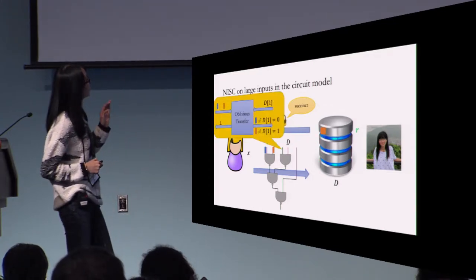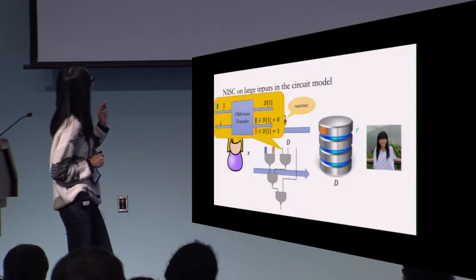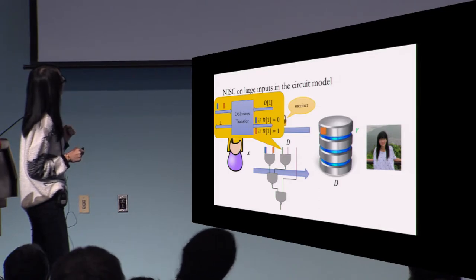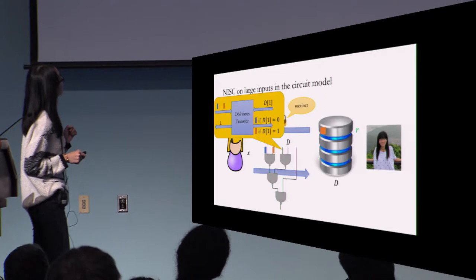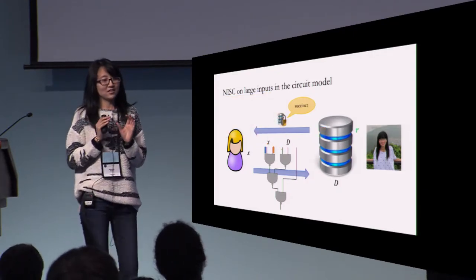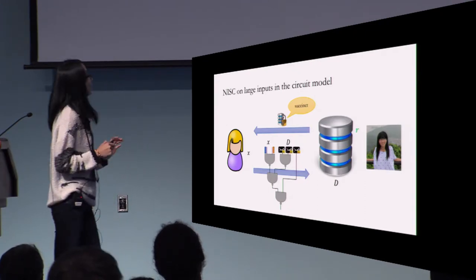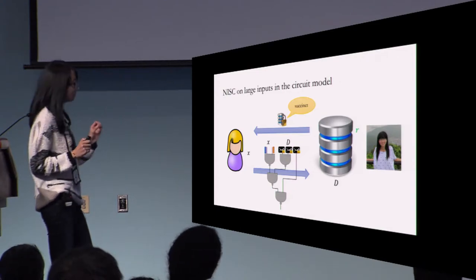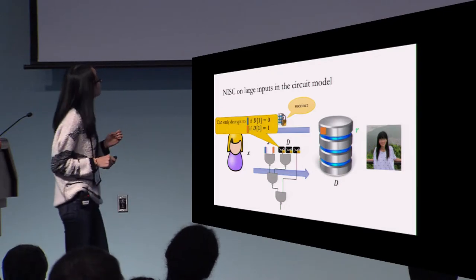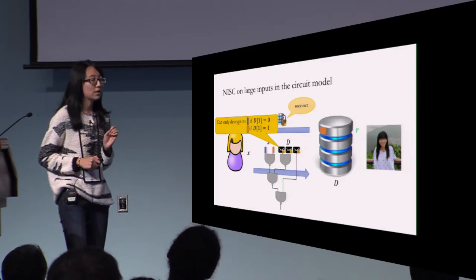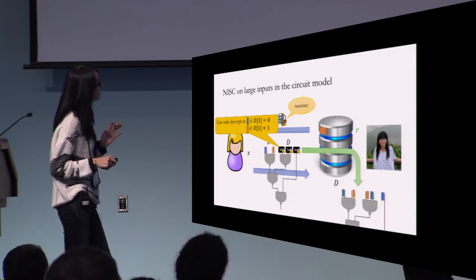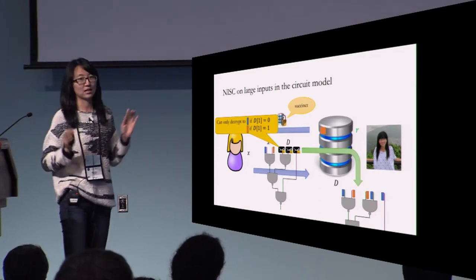I will need one label per input wire. For the input wires from Alice, it is very simple — she can just send them directly. But for the input wires from me, ideally we want to do one oblivious transfer per wire. For example, for the first wire, the two inputs from Alice are the two labels for that wire, and my input bit is the first bit of the database. If the first bit is zero, I get the zero label; if one, I get the one label. But we cannot do standard oblivious transfer — it needs more interactions. This is exactly what laconic OT can do.